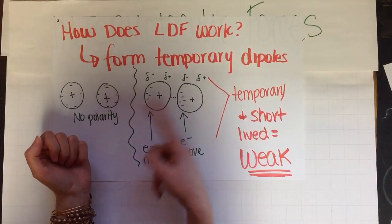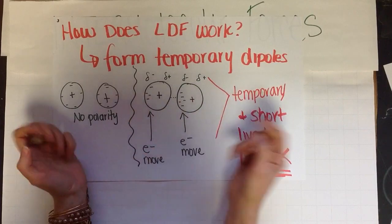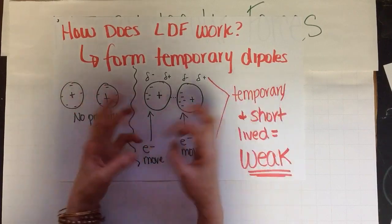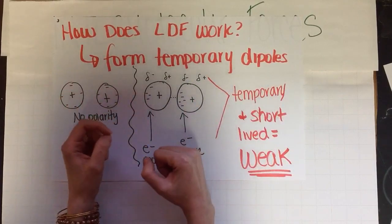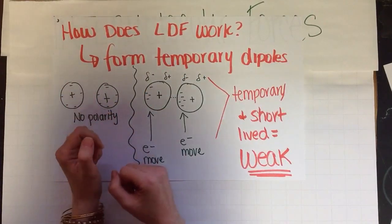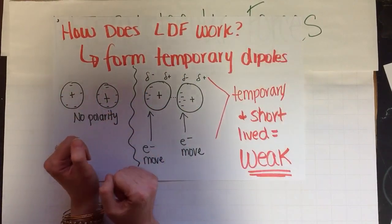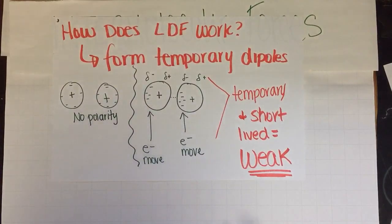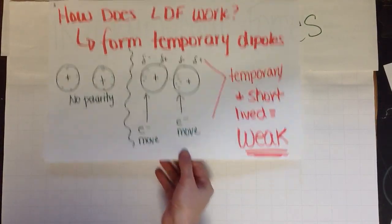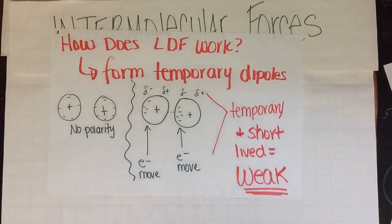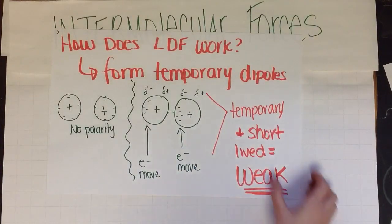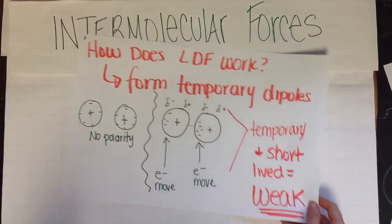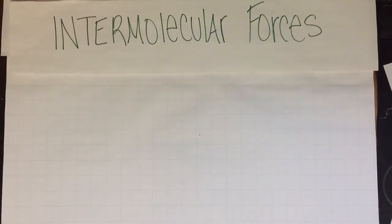This temporary dipole creation — where we temporarily make charged ends called dipoles — is what a London dispersion force is. London dispersion forces are the weakest, and they're seen in nonpolar molecules and noble gases. That's the end of your video.